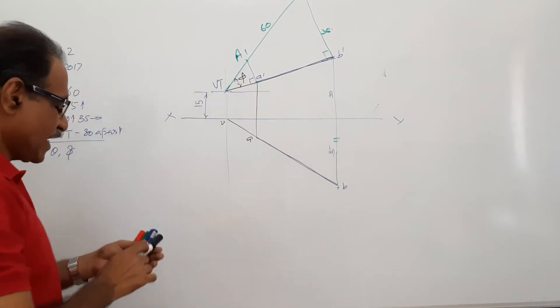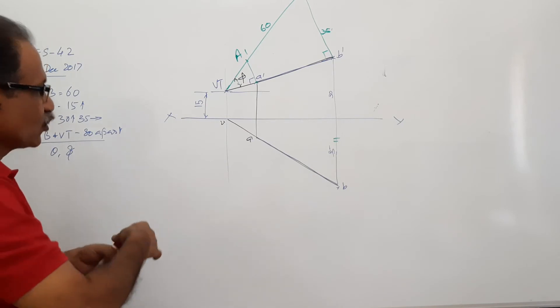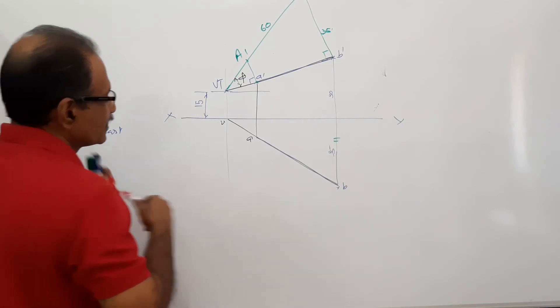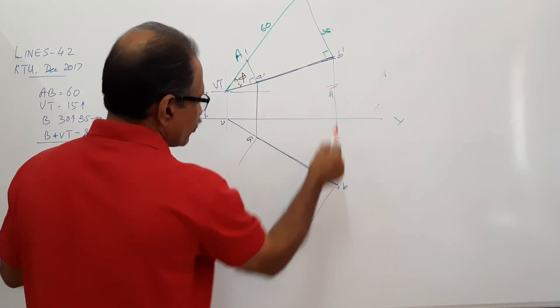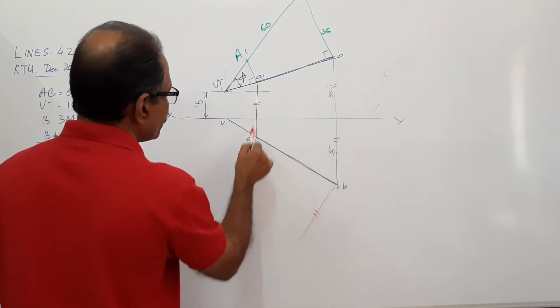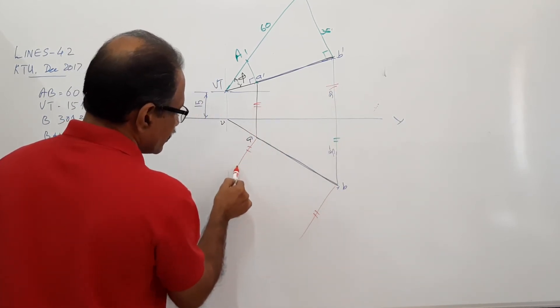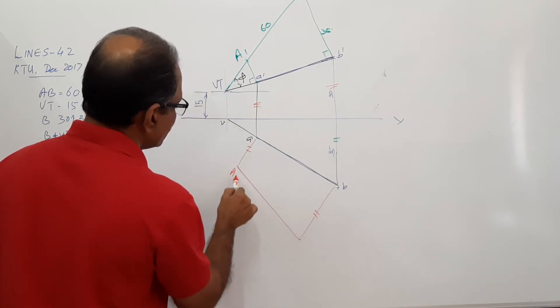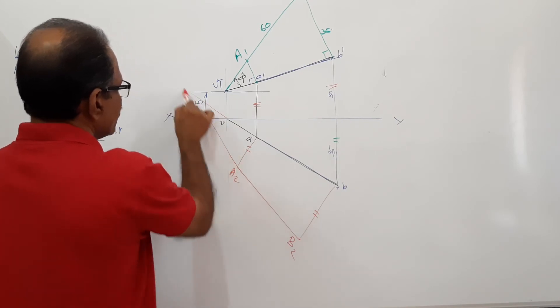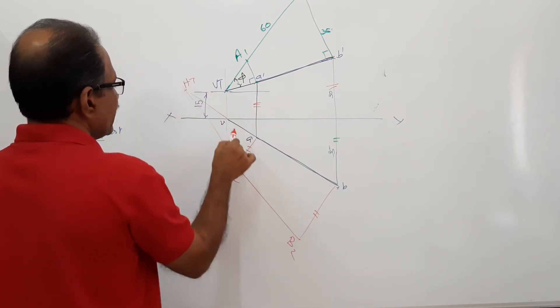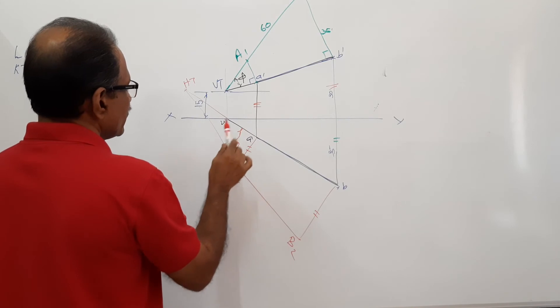You need theta. What you have to do? You have to preferably go for trapezoidal construction here. Mark it off. HT. And the enclosed angle is theta.